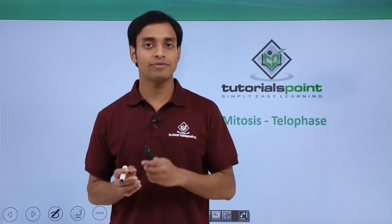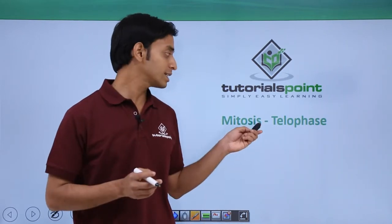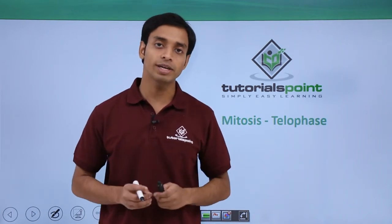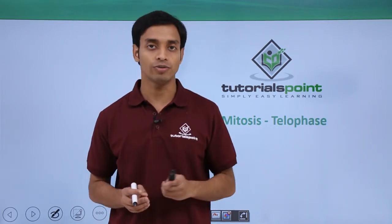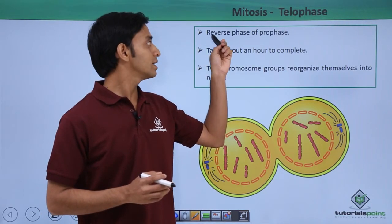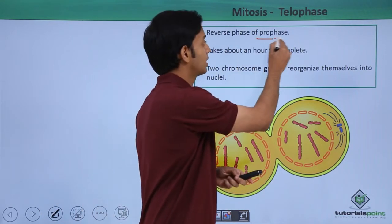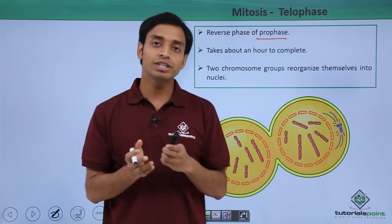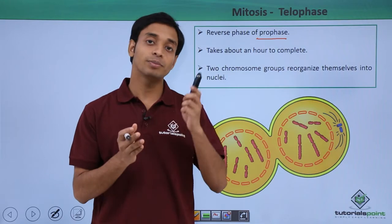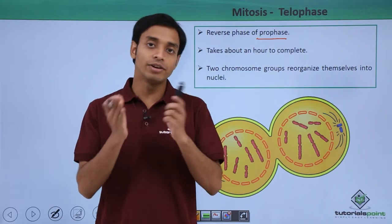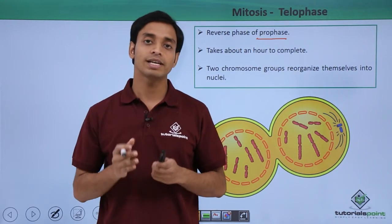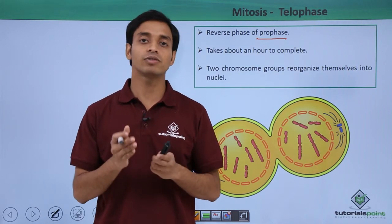Now these daughter chromosomes start moving towards the poles. After this is the phase known as telophase. Telophase is absolutely known as the reverse phase of prophase, because the conditions we are going to see here are quite similar to prophase but in reverse — the things which happened in prophase will now happen in the opposite manner.